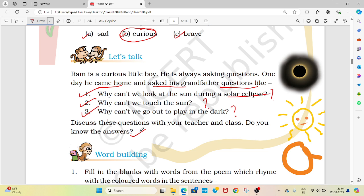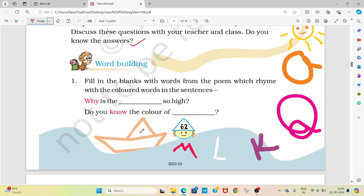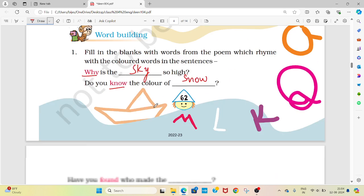Next, word building. Fill in the blanks with words from the poem which rhyme with the colored words in the sentences. Here you have to write rhyming words. Like, why is the sky so high? Do you know the color of snow? Do you know the color of snow. This is rhyming.